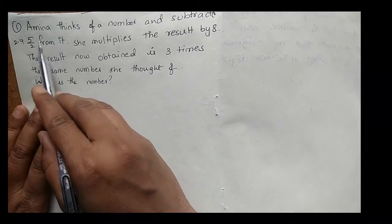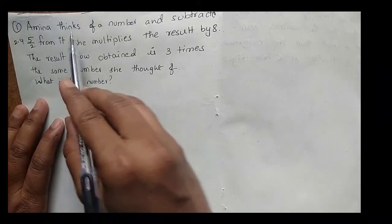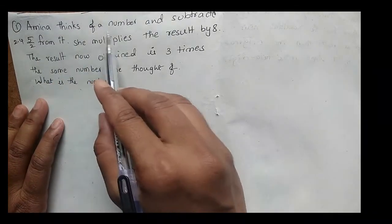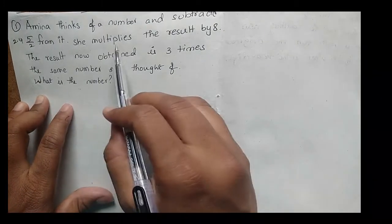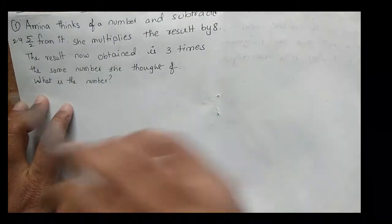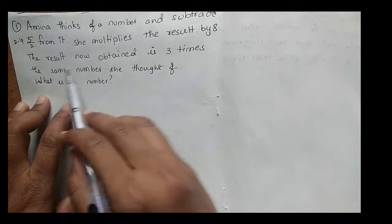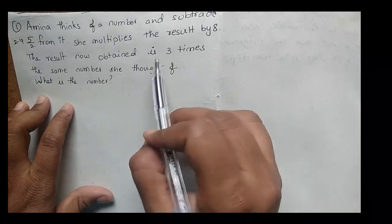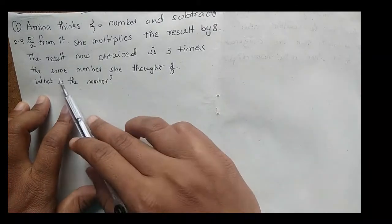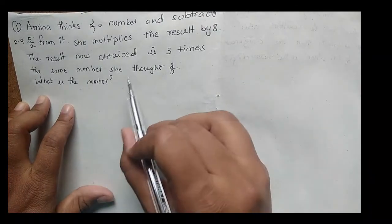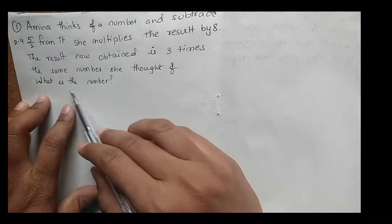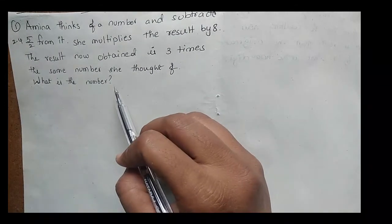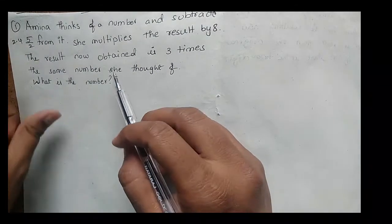The question: Amina thinks of a number and subtracts 5/2 from it. She multiplies the result by 8. The result now obtained is three times the same number she thought of. What is the number?